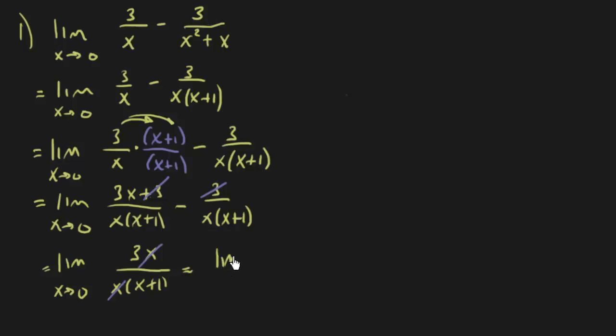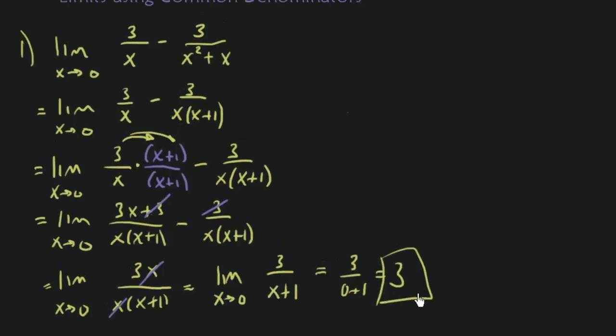So we cancel those out, and we have 3 over x plus 1, and now we can plug in x equals 0, and we're going to get 3 over 0 plus 1, so that's 3, and so our limit is 3.